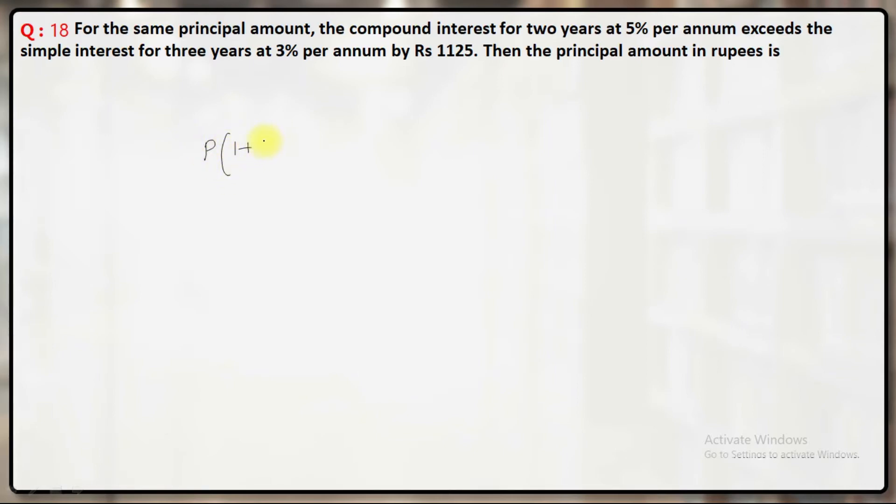become (1 + r), that is 5 by 100 raised to the power 2. Interest will be minus P. This is compound interest. Simple interest for three years will be P into 3 into rate of interest is 3 by 100.